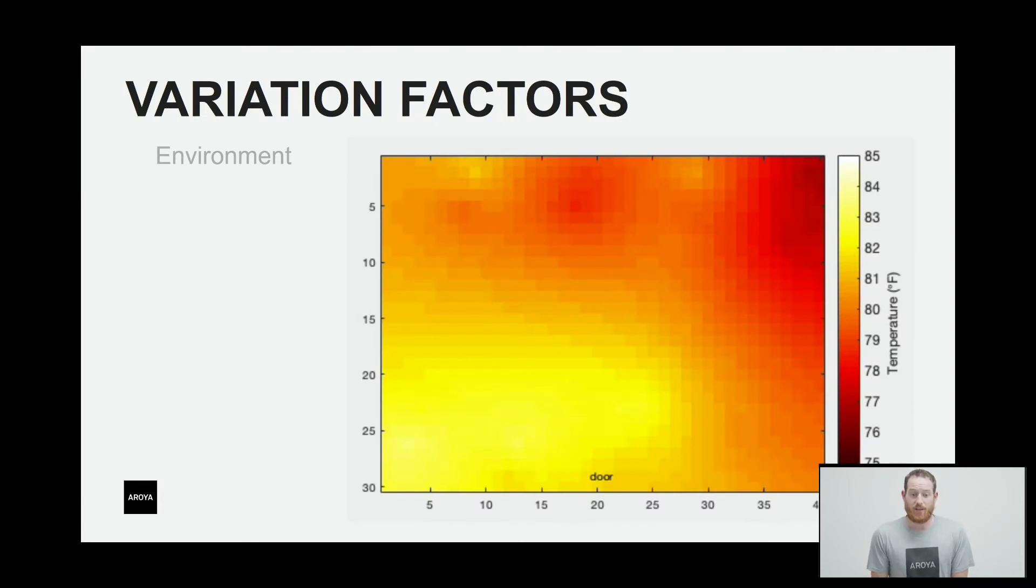Let's first take a look at these variation factors. So when we think about variation factors that affect crop, environment kind of comes to the top of the mind. In this case, we've got a picture of a fairly typical 40 by 40 room. This is an indoor cultivation facility in which we've taken 18 continuous readings across the room in different locations to build a gradient of the temperature. In the bottom left, we'll see that the temperatures floated around 82 degrees, and up in the top right, it's almost 10 degrees cooler. This can directly affect the variation or uniformity across a cultivar in this room.